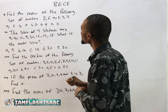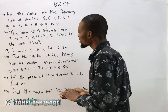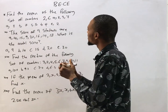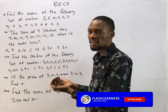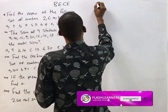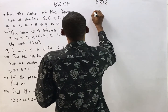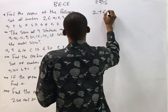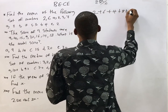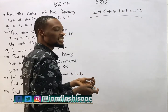Find the mean of the following sets of numbers. To find the mean, simply add all the numbers and divide by how many there are. It is simply the summation of S over N. So the mean of this would be 2 plus 6 plus 4 plus 8 plus 3 plus 7, over how many there are.